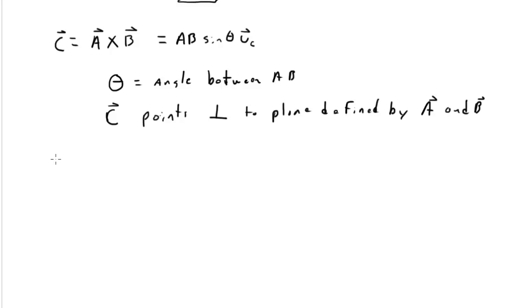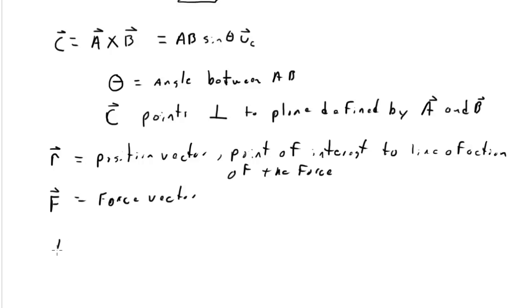So if we let R be a position vector that points from point of interest to line of action of the force, and F we write as a force vector, so this is the force, then the moment in vector formulation is R cross F.